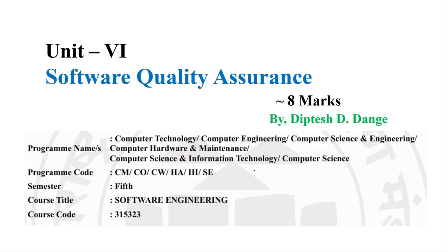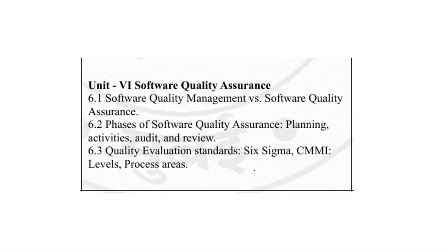So this is a fixed question from this chapter. In the previous video, we covered unit number 6 — the definitions and differences that can come in the exam. Today we will cover point number 6.2, which are the phases of Software Quality Assurance.